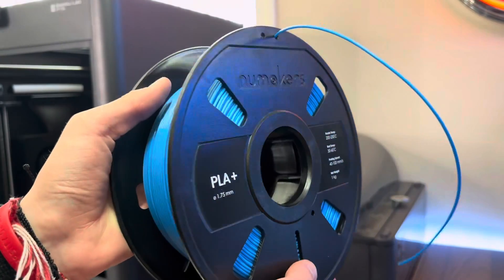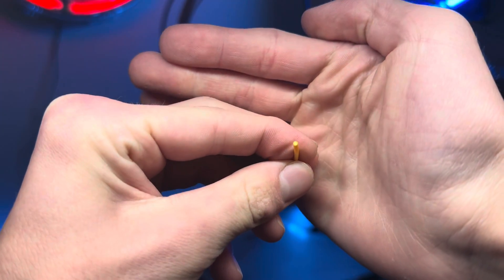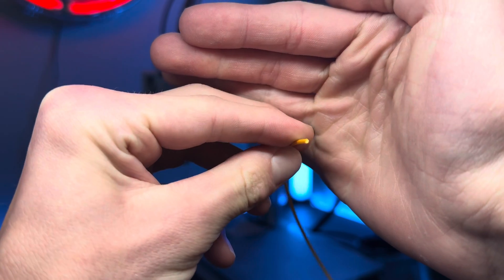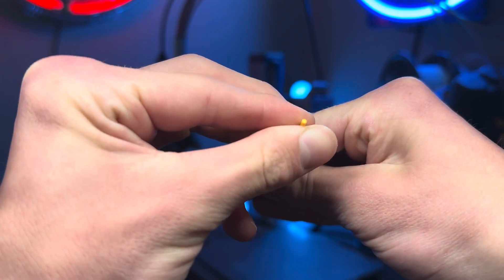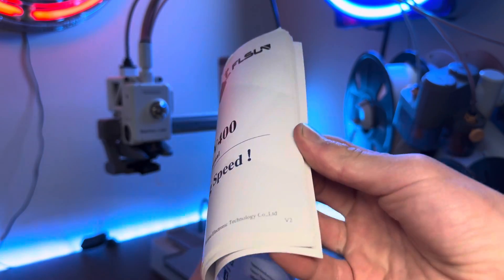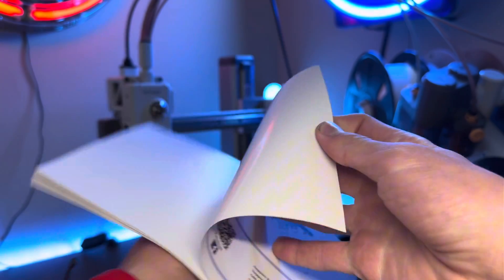There are two different thicknesses of filament, 1.75mm and 2.85mm. However, almost all 3D printers nowadays use 1.75mm. You'll be able to find what kind of filament your printer needs in the manual, or if you look it up online.